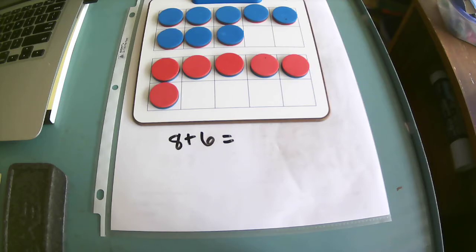So we're going to be talking about making a 10 to add within 20 today. We will be breaking apart one addend to make a 10 and add the remaining amount to find the total. This will be making that friendly number of 10, which makes the addition facts easier to solve. So let's go ahead and get started.